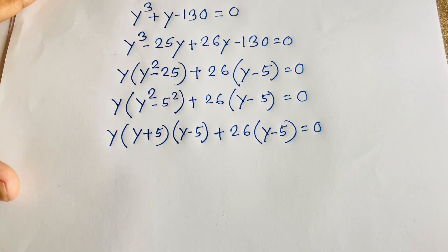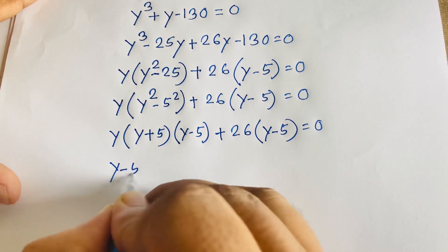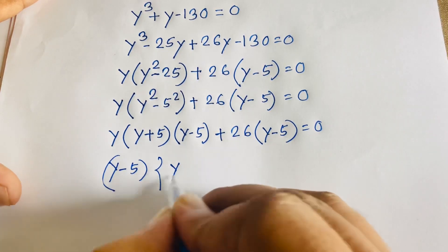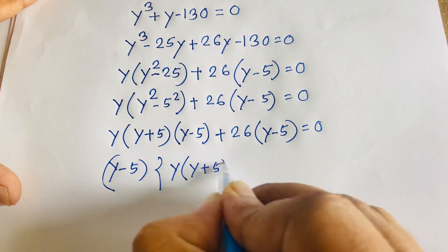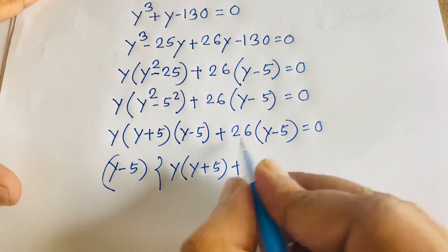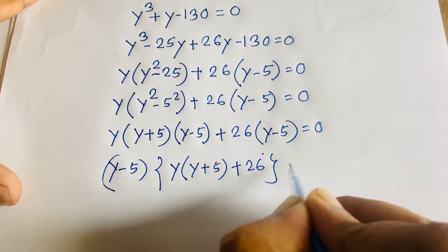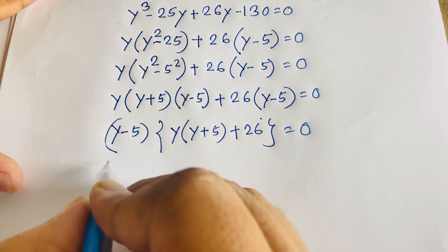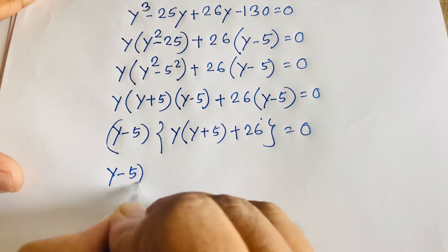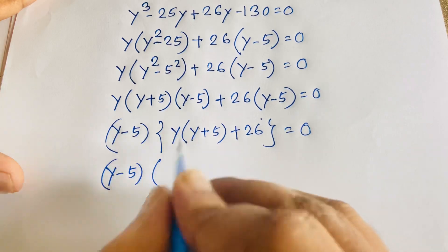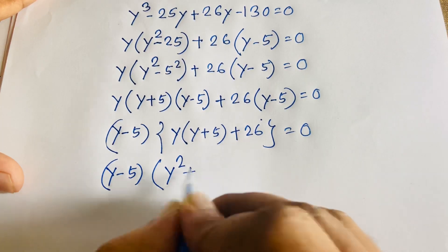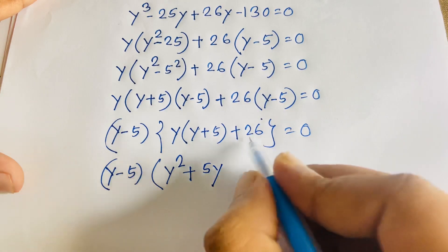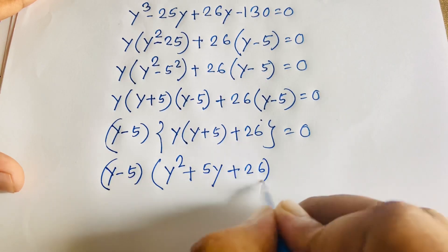Now (y − 5) is a common factor, so factoring it out gives (y − 5) times (y(y + 5) + 26) equals 0, which simplifies to (y − 5)(y² + 5y + 26) = 0.